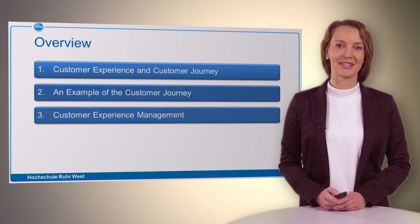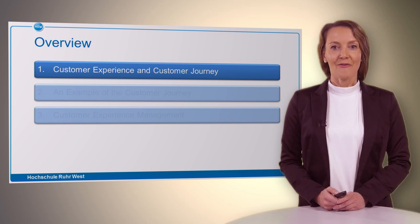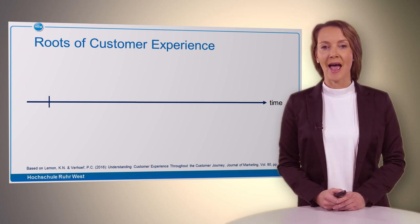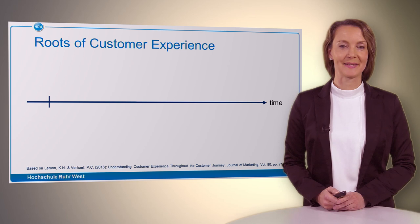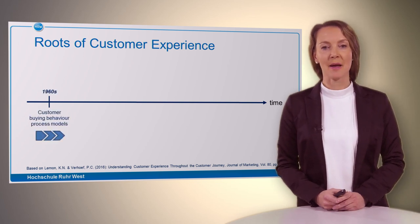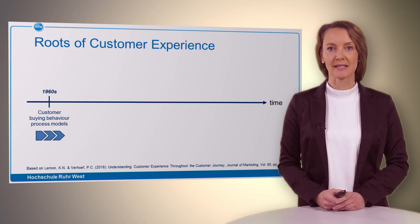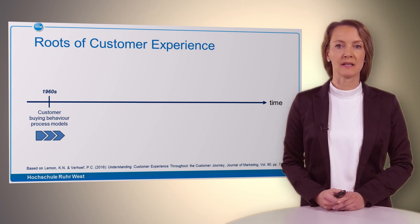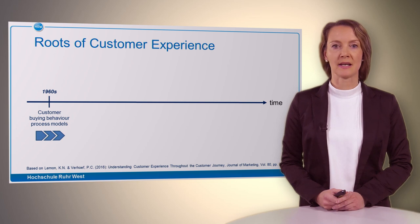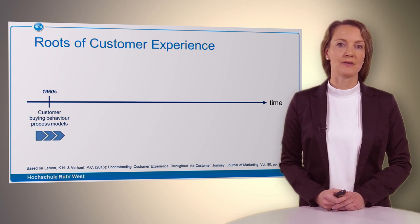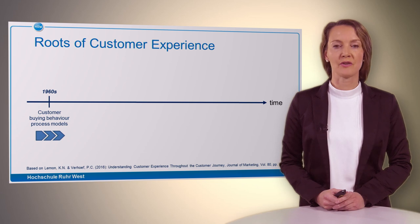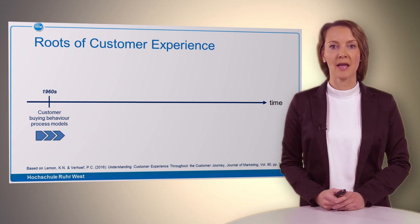Let's start with the first section. First of all, we talk about the roots of customer experience. Here you can see a timeline design starting in the 1960s. In the 1960s, marketing academics and practitioners started to think about the different phases. Different customer behavior process models were developed, showing different stages of the customer purchase process — starting from need recognition, search of information, evaluation of alternatives, purchase, and post-purchase behavior.